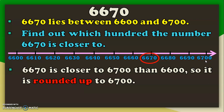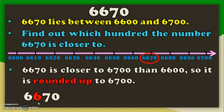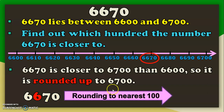Using the other method for 6670, rounded to the nearest 100: look at the hundreds place — the digit is 6. Then look at the digit immediately after it, which is 7. Since 7 is bigger than 5, the number is closer to the upper limit. So, 6670 rounded to the nearest 100 is 6700.